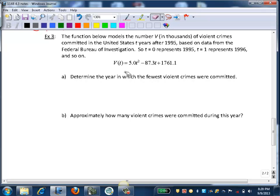So here's our function: V(t) equals 5.0t squared minus 87.3t plus 1761.1. Part A, we want to determine the year in which the fewest violent crimes were committed.